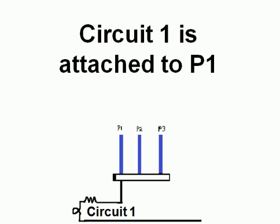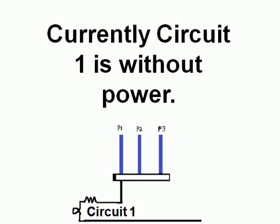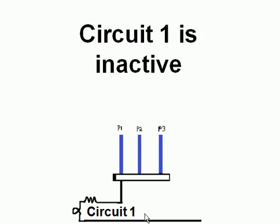Circuit one, this guy down here, is attached to P1, to prong one. Currently, circuit one is without power. Circuit one is inactive.